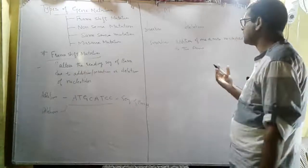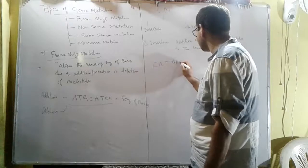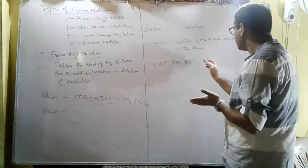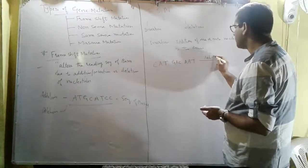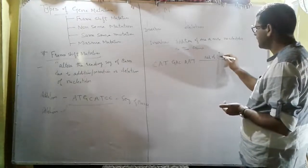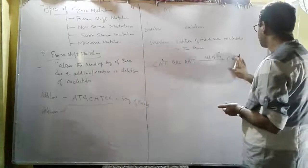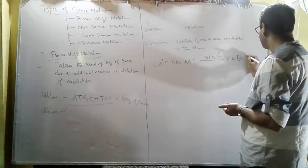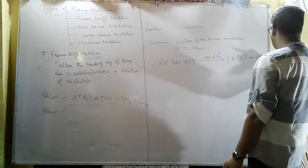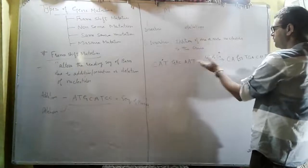For example, if we have a sequence C, A, T, G, A, C, A, A, T — this is a sequence of bases of a particular gene. Now if we do an addition of G, for example at a particular position, then the sequence becomes C, A, G, T, G, A, C, A, A, T — meaning all the codons have been altered by the addition of one nucleotide.